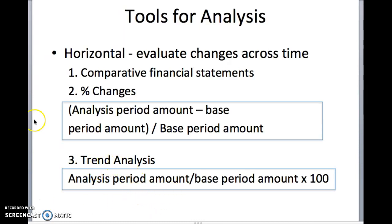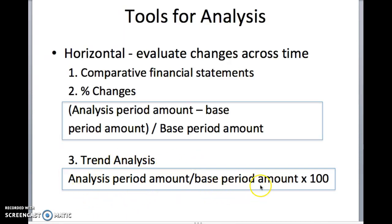Now, for trend analysis, this is another way to look at the percentages. You can get the analysis period amount divided by the base period amount times 100. So, using my previous example, analysis period amount would be the more recent year — that will be 2017 — divided by the base period amount of 2016. For example, if you had sales amounting to 2,000 in year 2017, compare that with your base period amount of 500 pesos in sales in year 2016, and multiply by 100 to see by how much the sales grew for 2017.